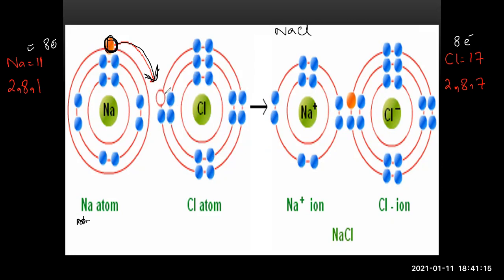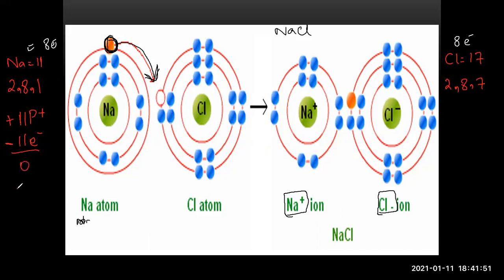When sodium transfers its last shell electron to chlorine, sodium becomes a positive charge ion. Chlorine becomes a negative charge ion. Sodium originally had 11 protons and 11 electrons — neutral. After losing 1 electron, it has 11 protons but only 10 electrons, giving it a +1 charge. Chlorine had 17 protons and 17 electrons — neutral — but after gaining 1 electron, it has 17 protons and 18 electrons, giving it a -1 charge.